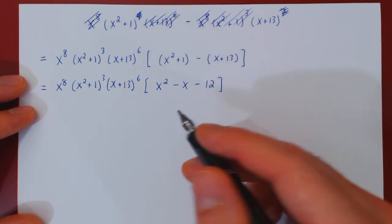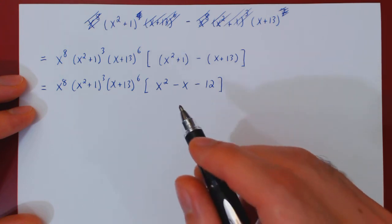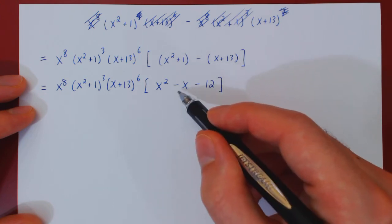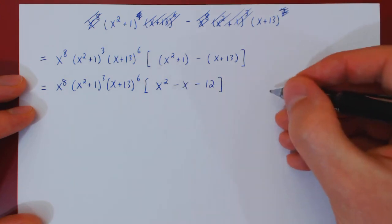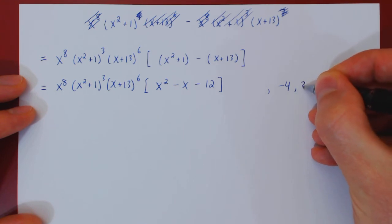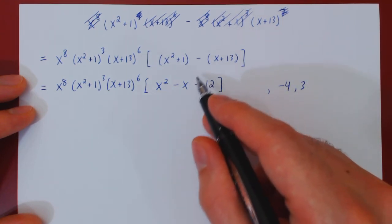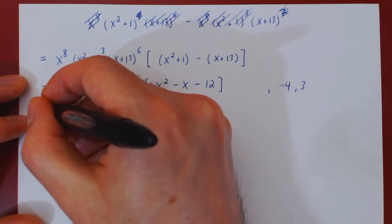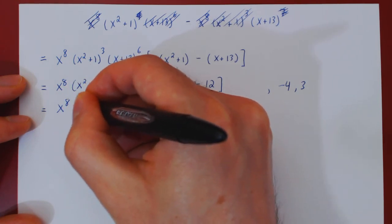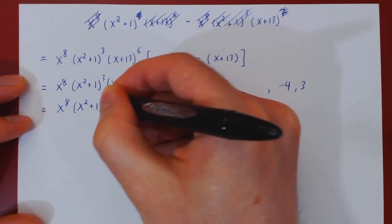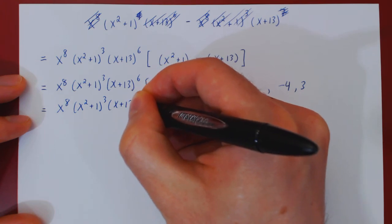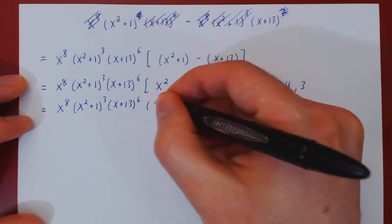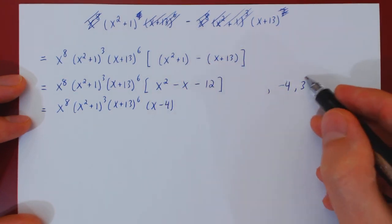And again we can factor, hopefully by inspection, thinking of the product and sum trick. We need two real numbers whose product is negative 12, and whose sum is negative 1. That is, of course, negative 4 and 3. The product of negative 4 and 3 is negative 12. The sum of negative 4 and 3 is negative 1.